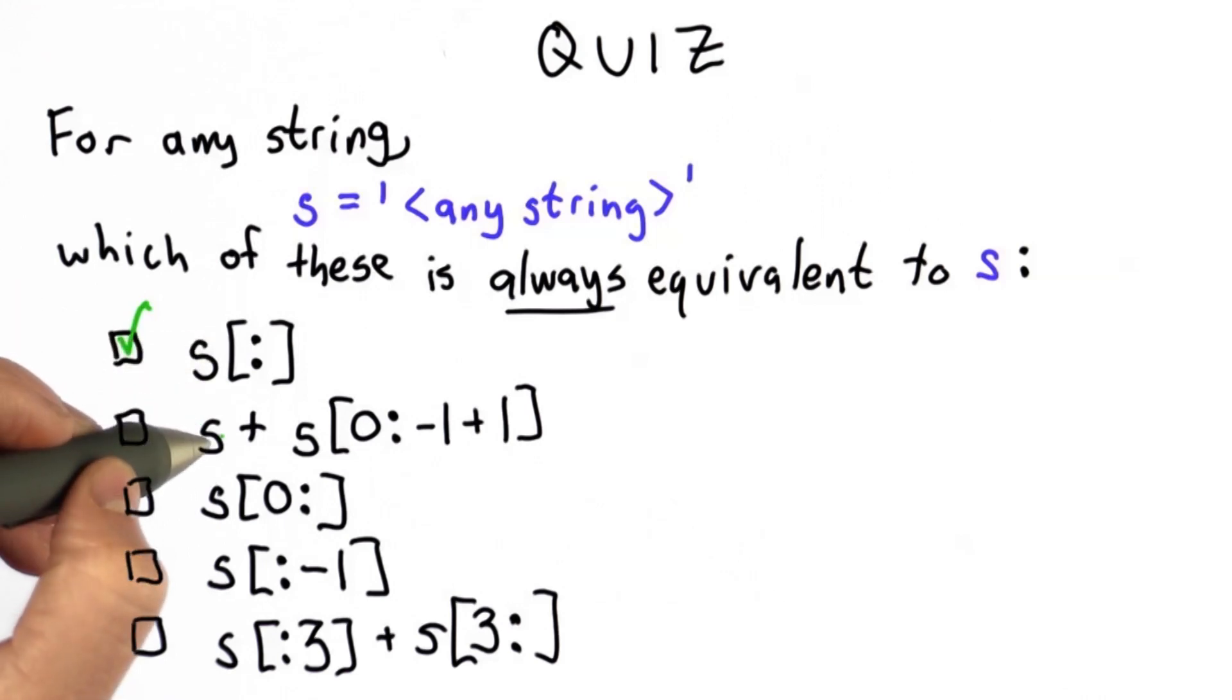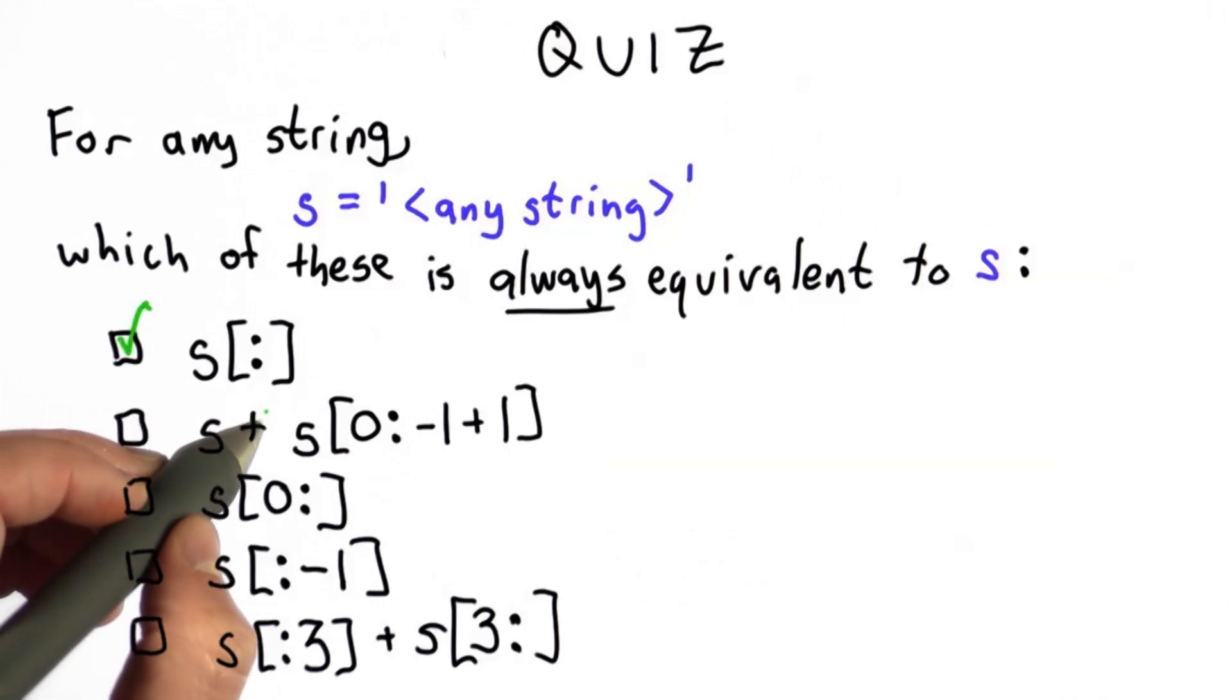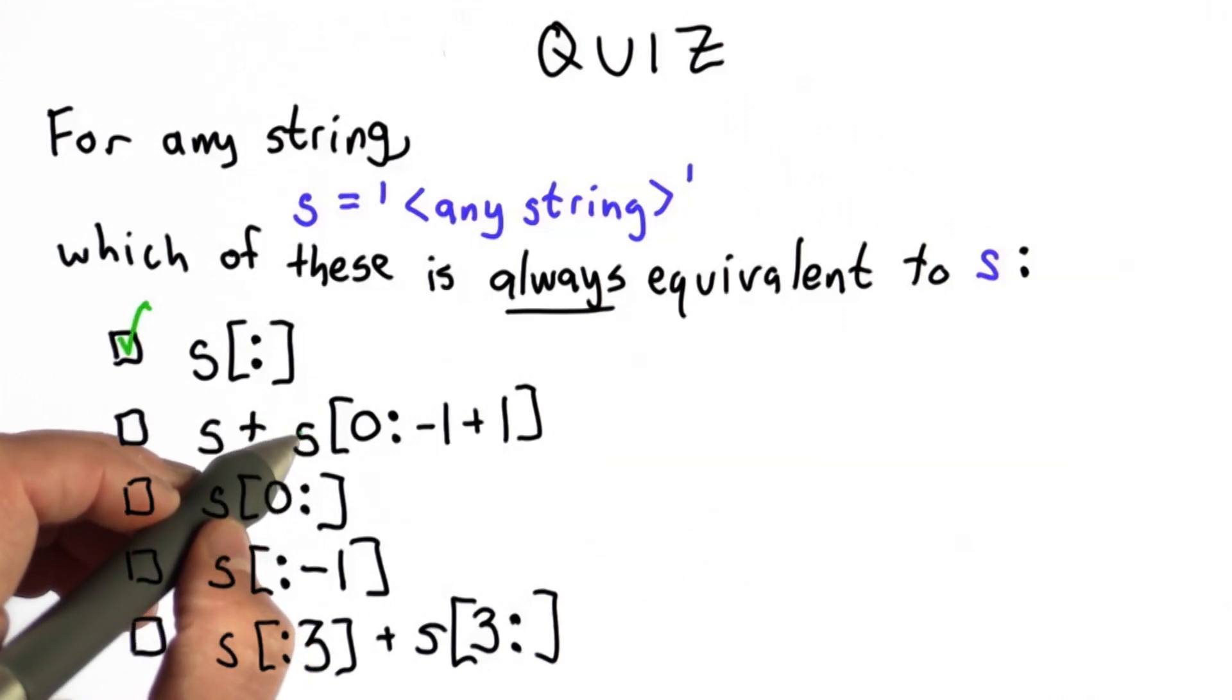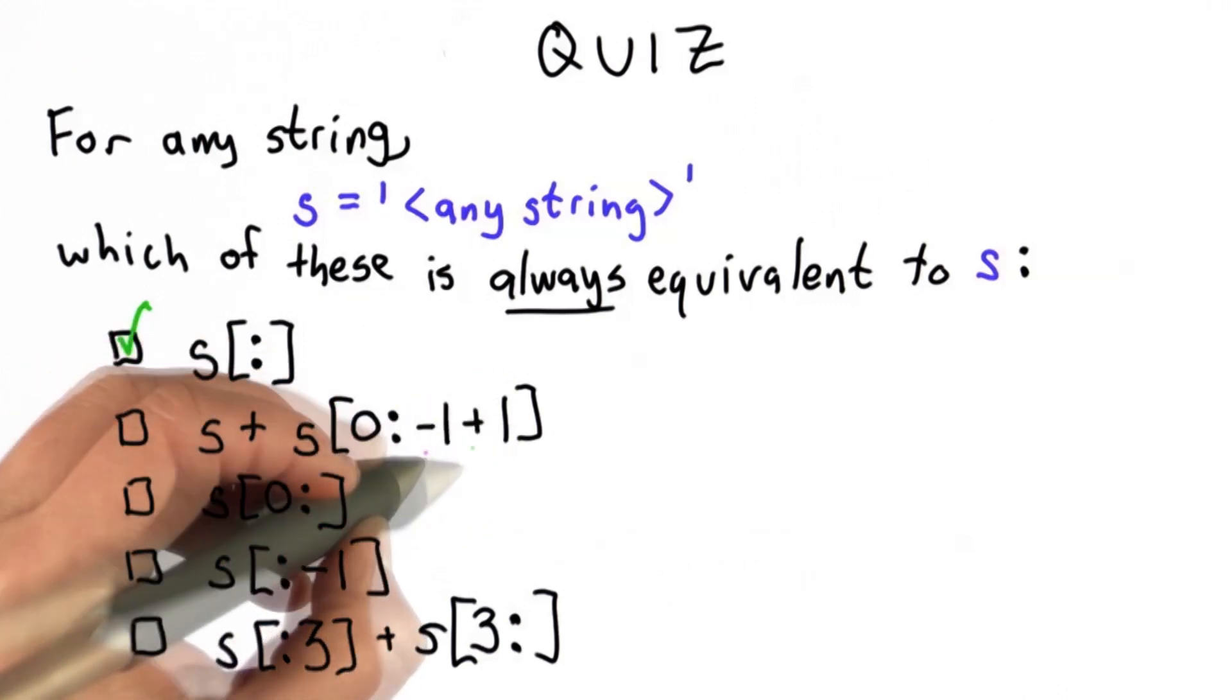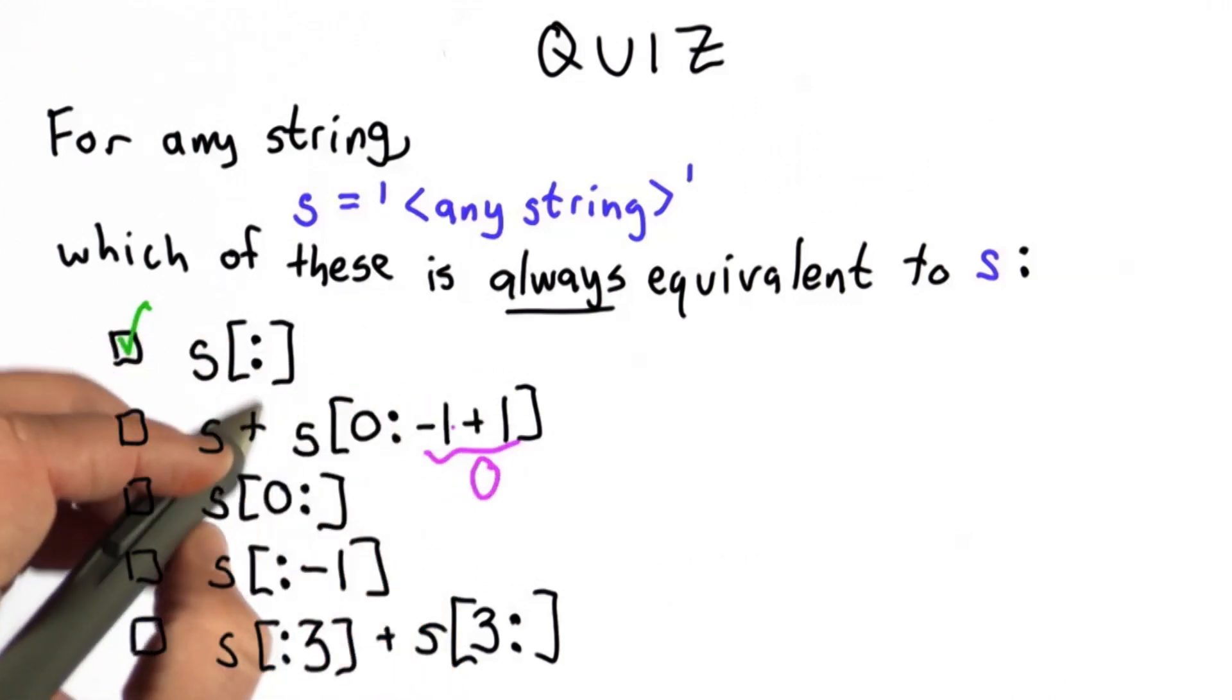So the second one's a little trickier, but this also always has the same value as the string s. The reason is we have the original string s, and we're concatenating to it the string s[0:-1+1], while -1 + 1 has the value 0.